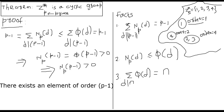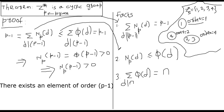I will also need another fact. So p minus 1 equals the sum of np(d) over all d dividing p minus 1 — this comes straight from Fact 1. We also proved earlier that np(d) is bounded by φ(d). In fact, we proved that np(d) equals φ(d) if we know for sure that np(d) is greater than 0; otherwise, it is bounded by φ(d). The less-than-or-equal-to comes straight from this fact.